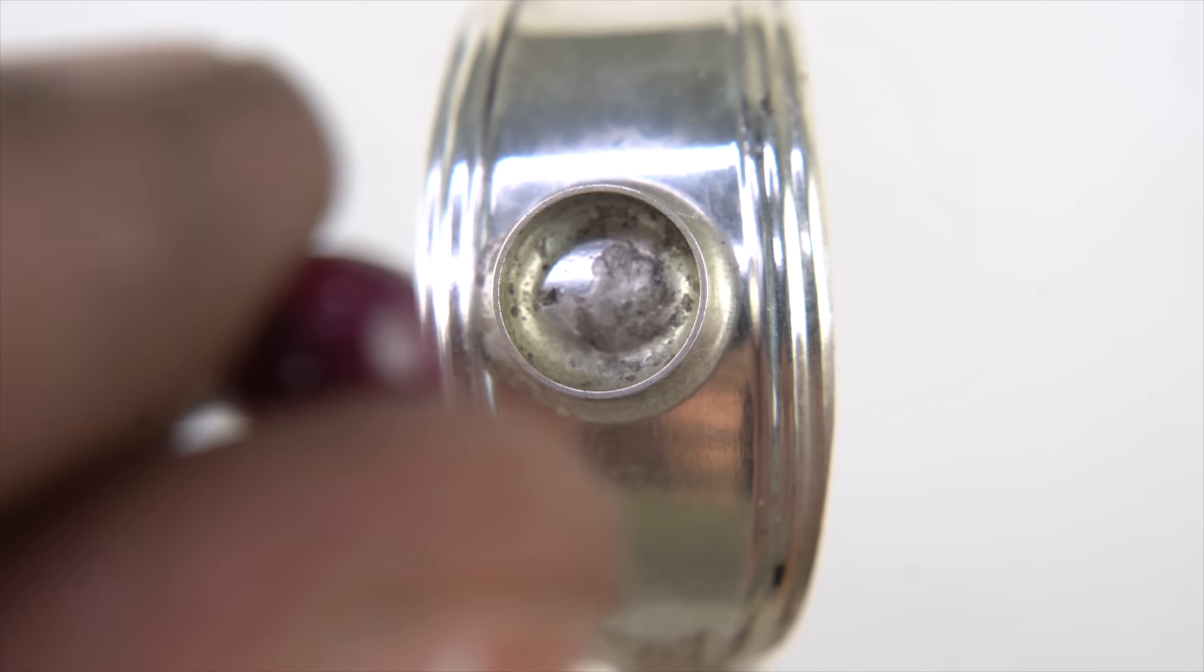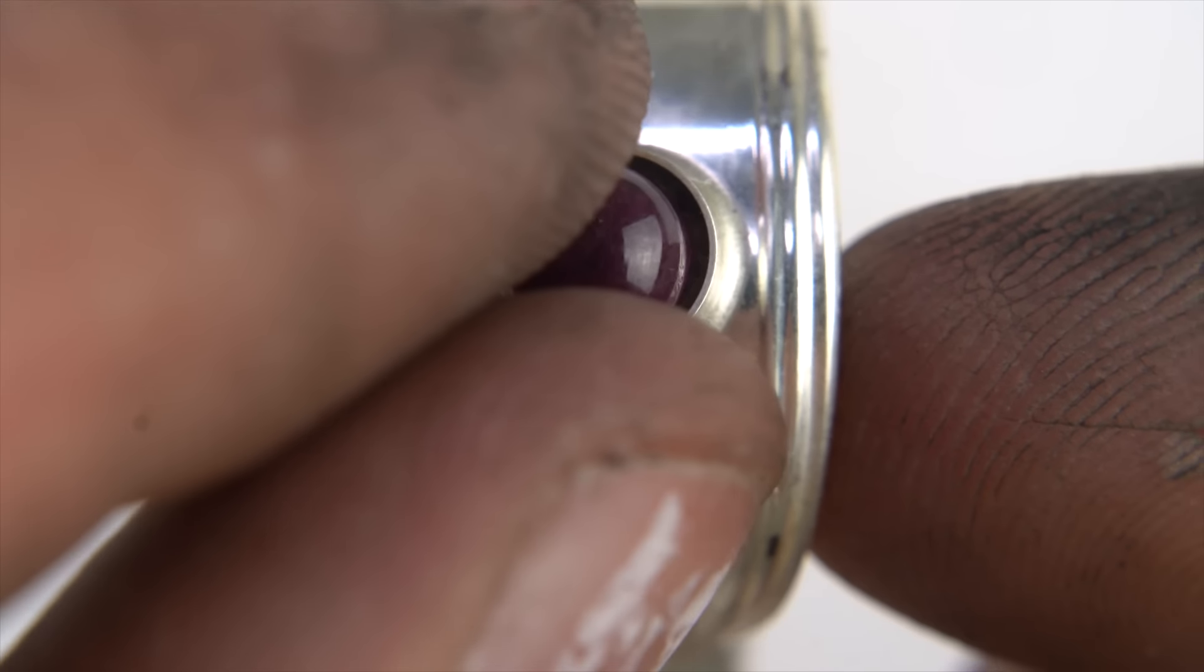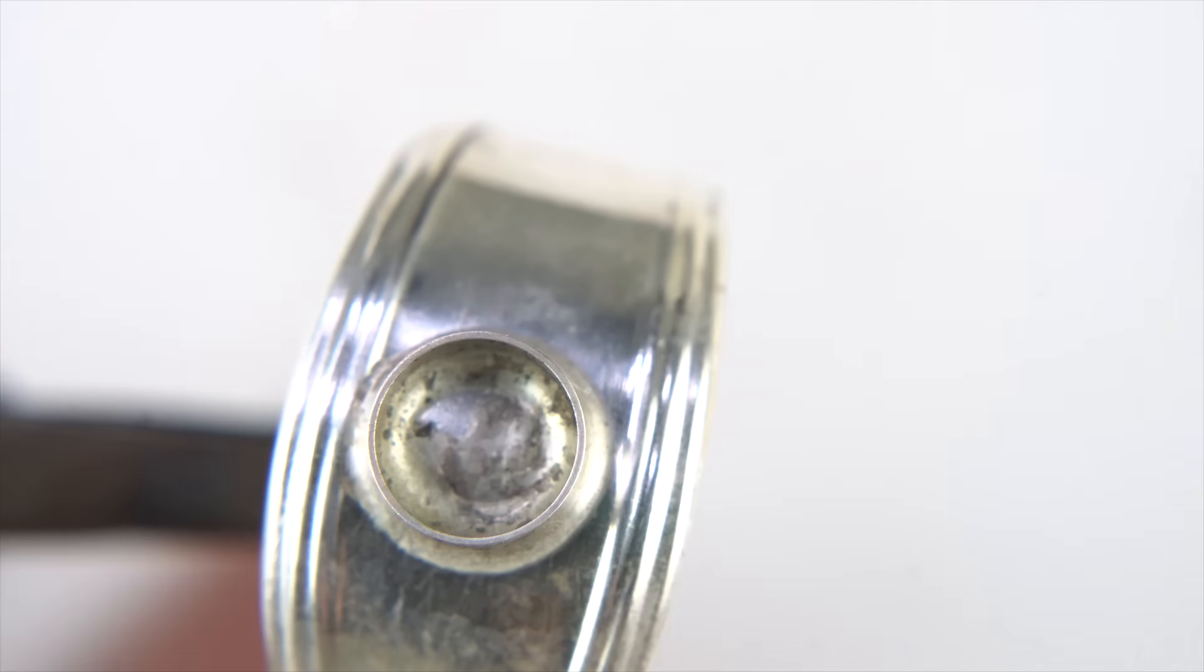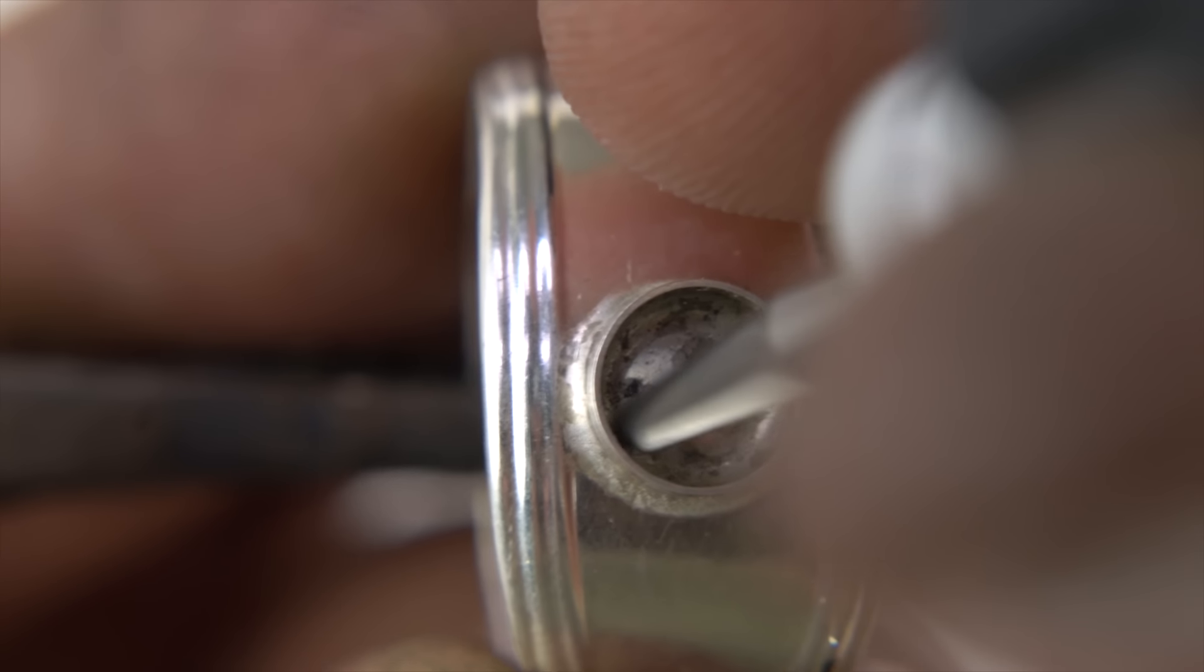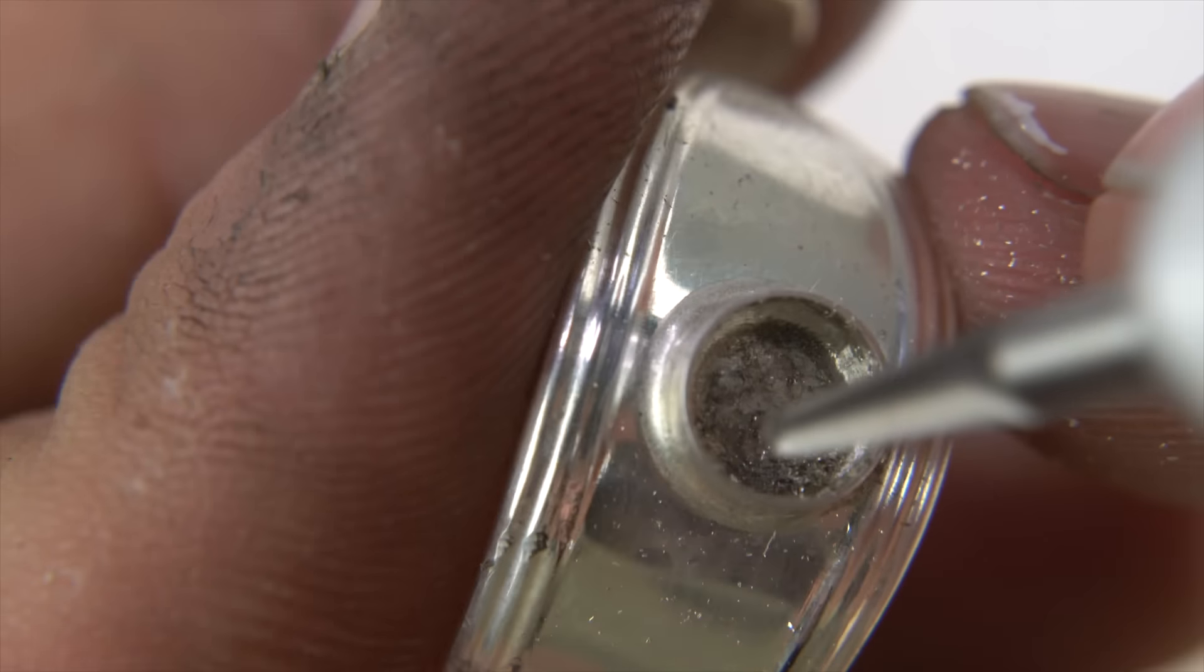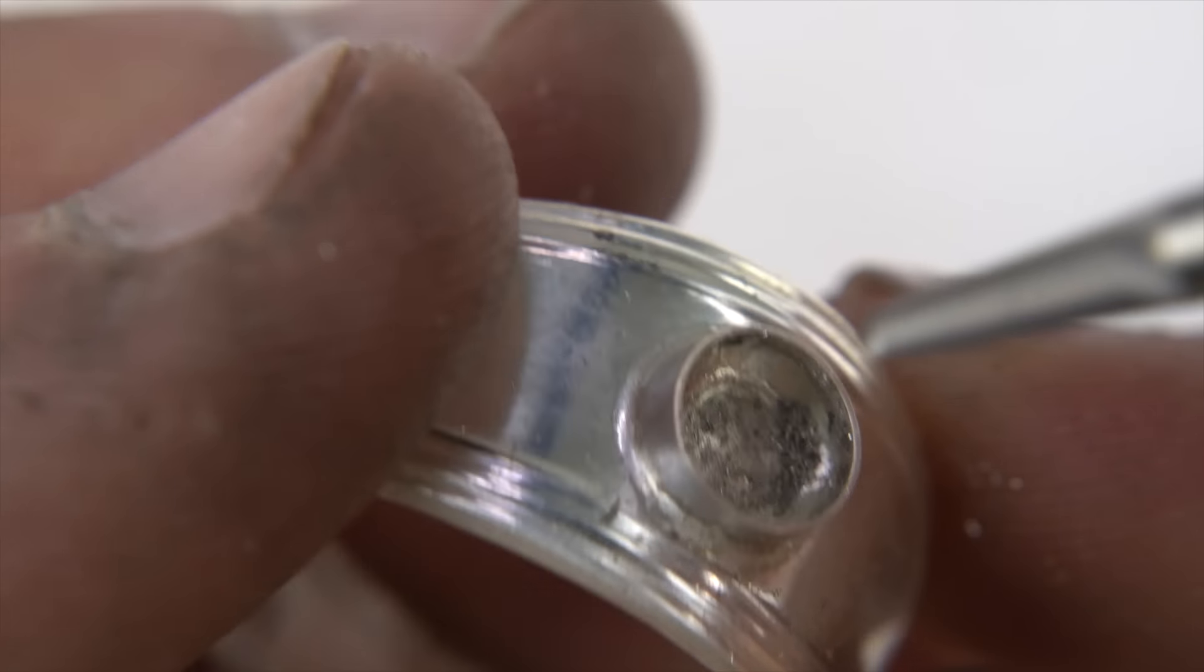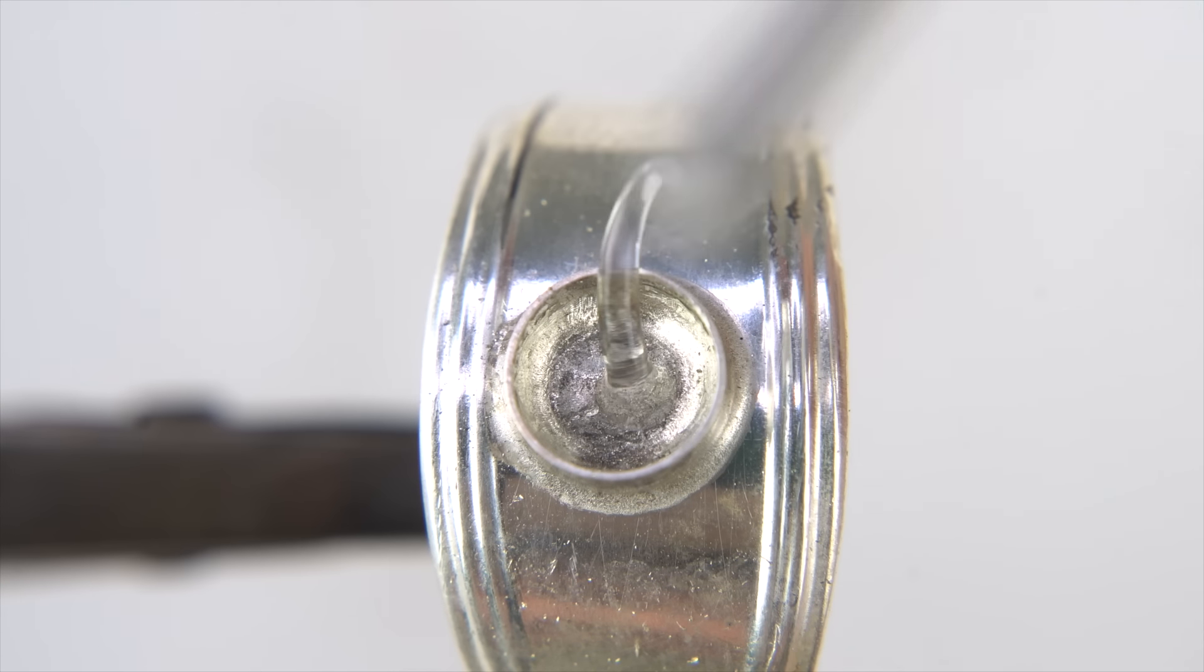So I have that little ruby. First thing I did, I put it in to make sure it fit. And it was pretty good. So I took it out. And what I'm going to do is take that rotary tool and grinded out some of the inside where the solder kind of spilled up.